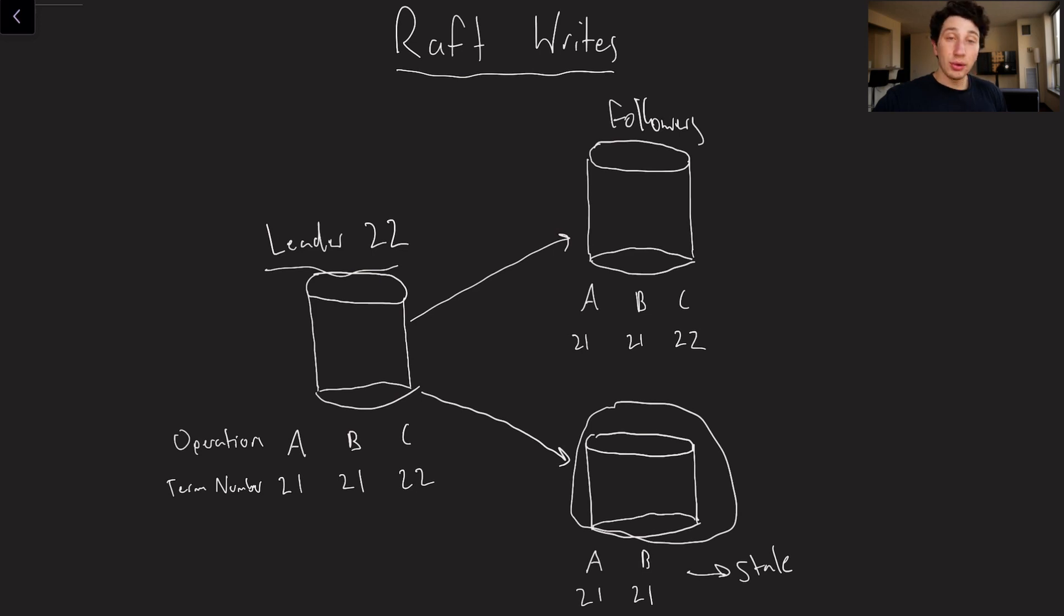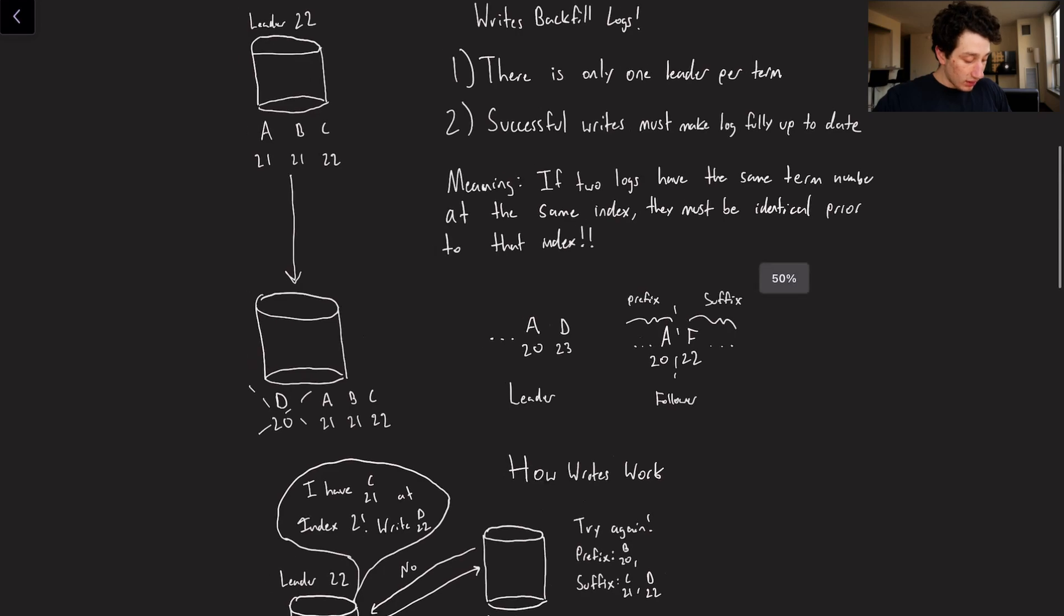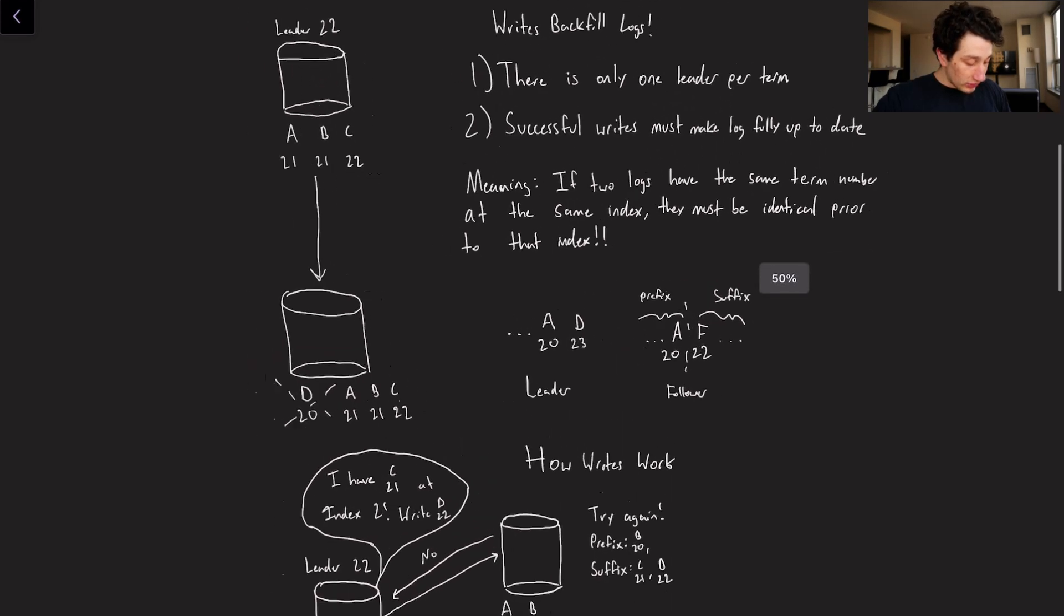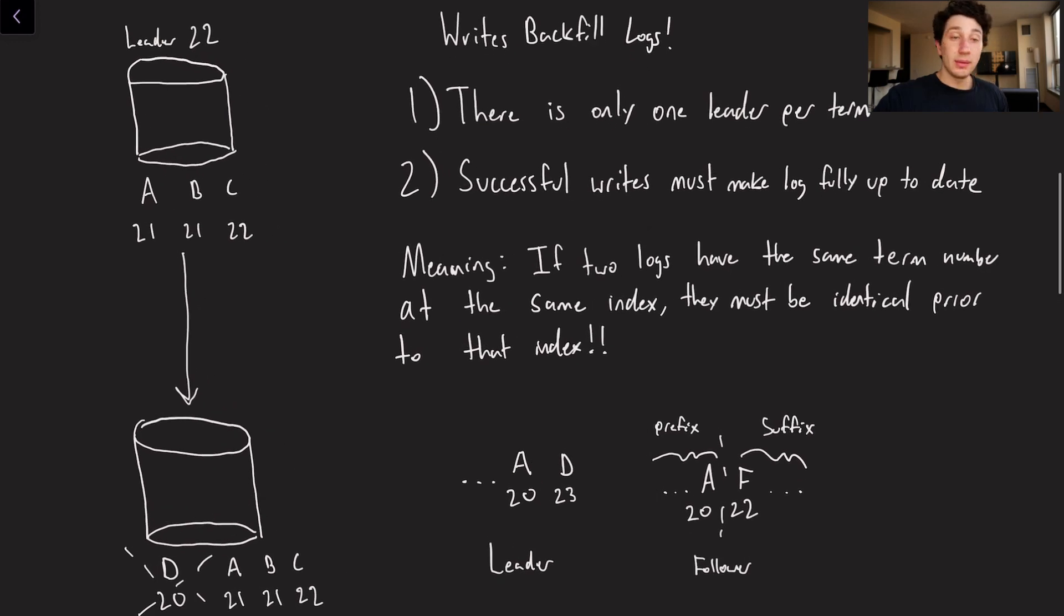As you can see the actual operation and term numbers of the leader look like this and so we're missing C22 which means that in the 22nd term, so meaning this leader right here, we wrote C in that basically area of the log. So what does that actually mean about Raft writes? Well not only do writes have to actually write to the log but more importantly they also have to be able to backfill the log.